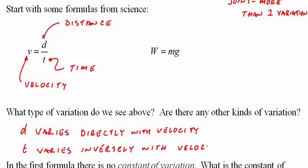Meaning, assuming the distance doesn't change, if I take a longer amount of time, my velocity goes down. If I take a shorter, smaller amount of time, my velocity goes up. We call that an inverse variation.